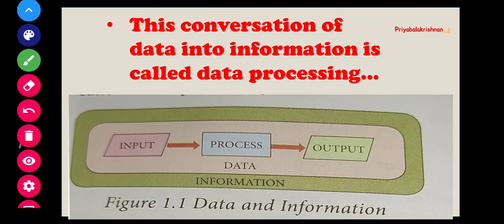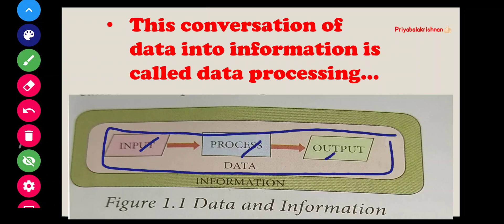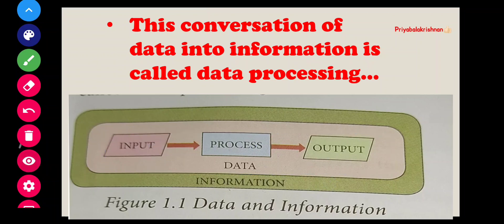Converting data into information is called data processing. We use a simple diagram: Input → Process → Output. The data is the input, it goes through a process, and the output is information. So the conversion of data into information is called data processing.